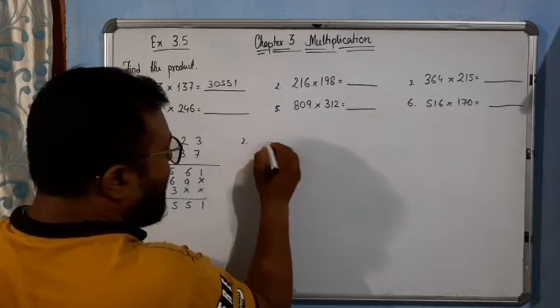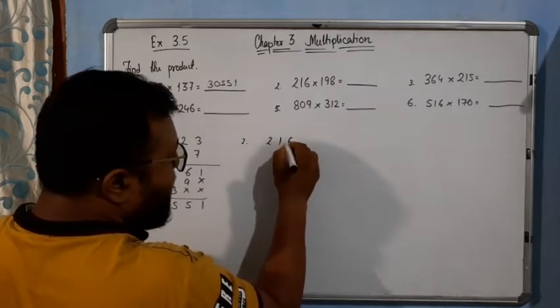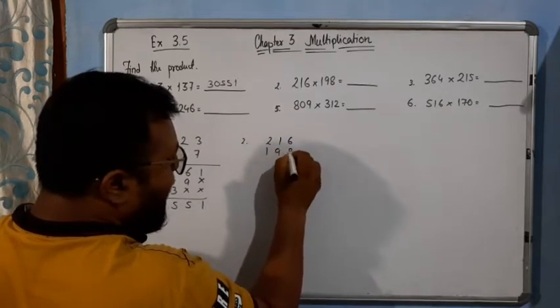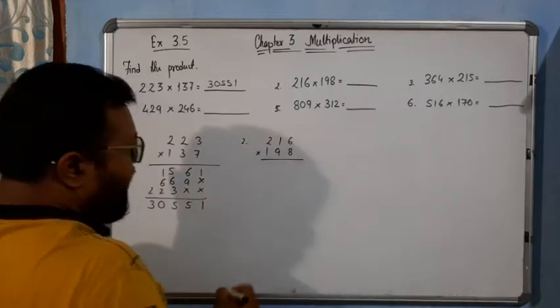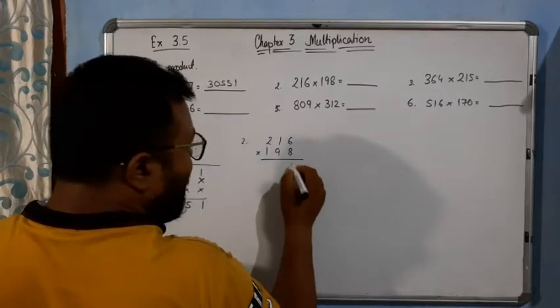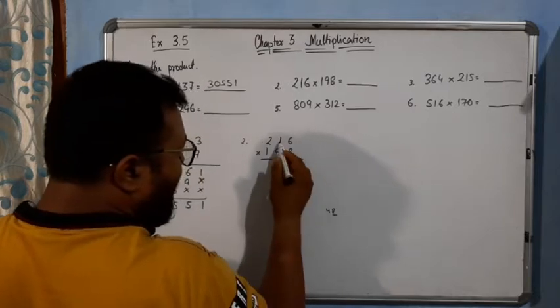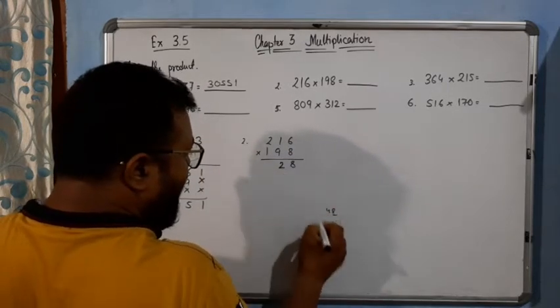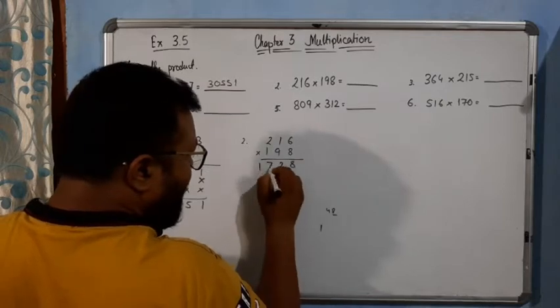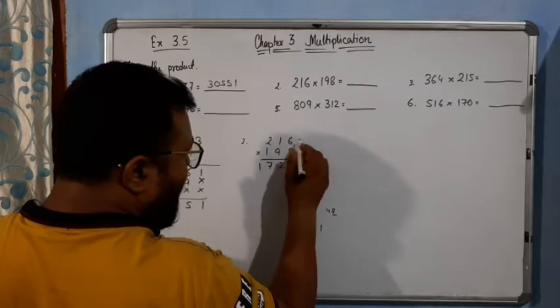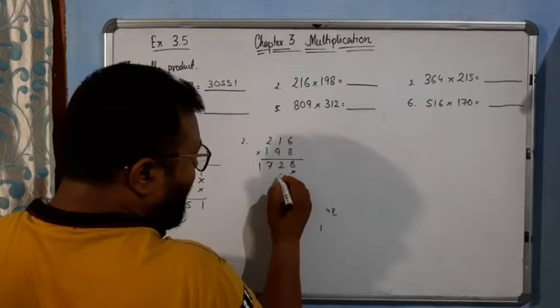Now the second one: 216 multiplied by 198. So you will multiply it by 8. 8 times 6 is 48, write 8, carry 4. 8 times 1 is 8, 9, 10, 11, 12. Write 2, carry 1. 8 times 2 is 16, 17.